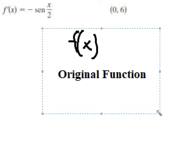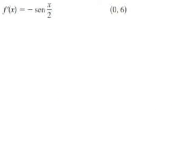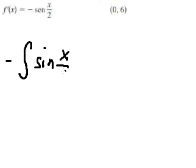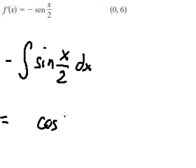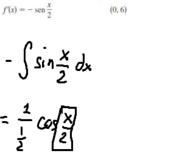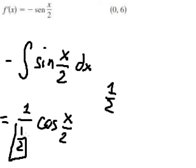So to do this one, we need to use integration. The integration of negative sine of x over 2 gives us cosine of x over 2, and we have 1 over 1/2 — because the coefficient of x over 2 is 1 over 2, that's why we have 1 over 2 here.